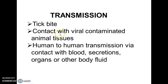Another means of transmission is by contact with viral-contaminated animal tissues. For instance, if you are handling meat and the animal was infected with this virus, contact with that tissue can make you sick with Crimean Congo Hemorrhagic Fever. There is also human-to-human transmission through contact with blood, body secretions, organs, or any body fluid of an infected person.